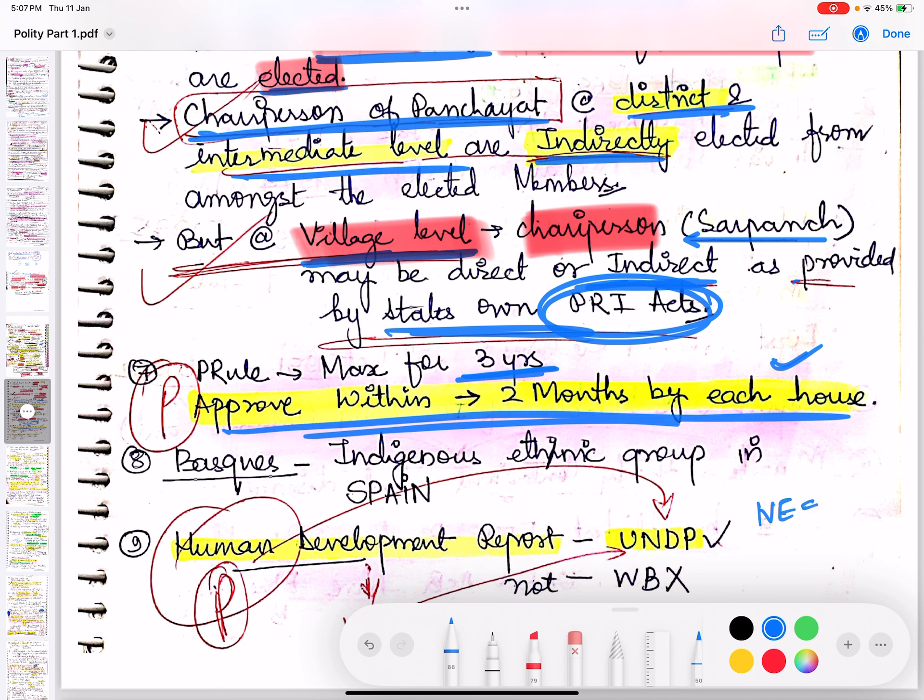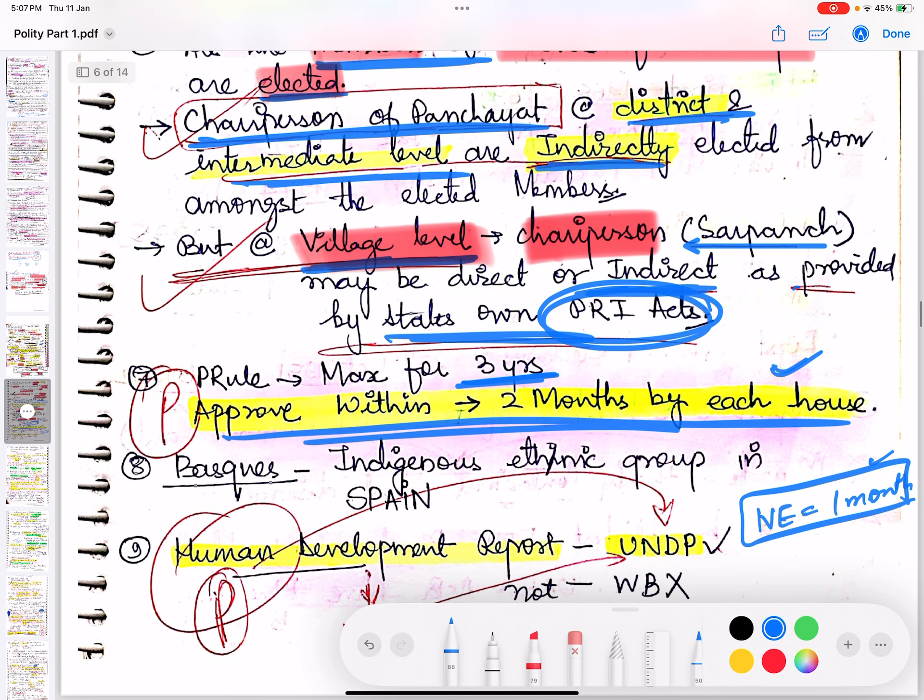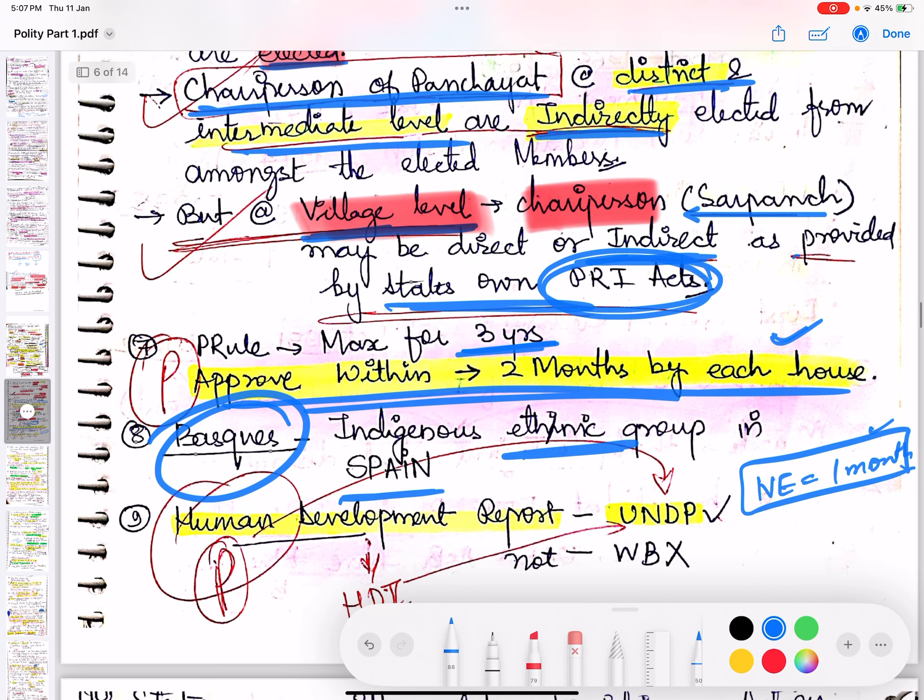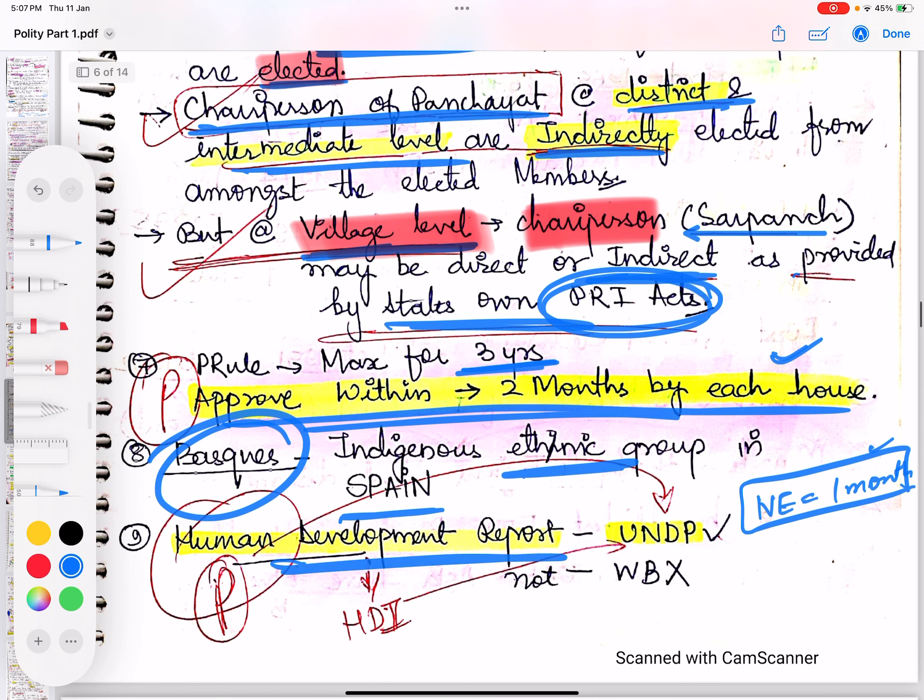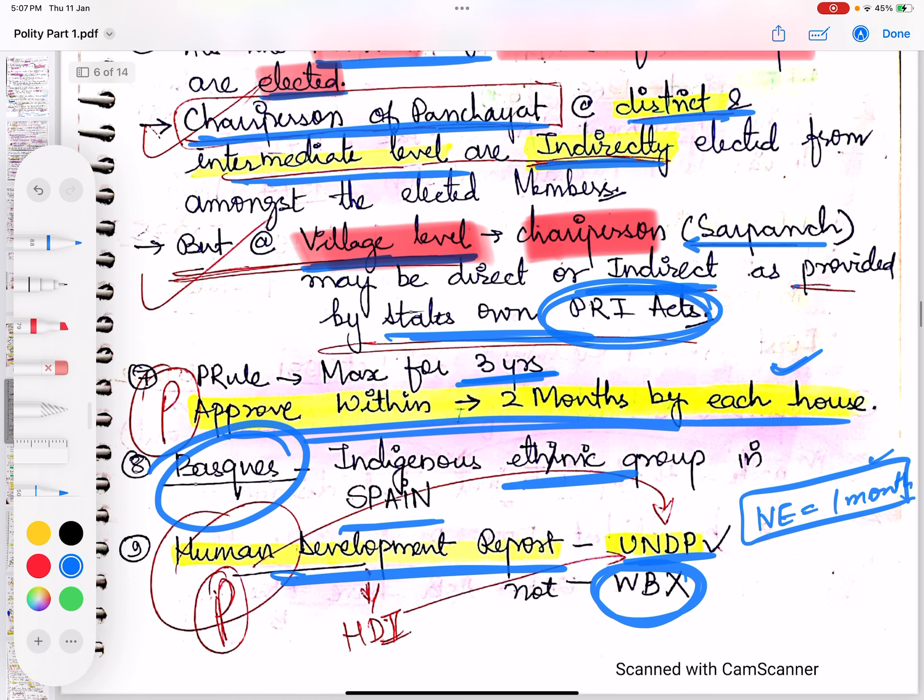Basque people - they are the indigenous ethnic groups of Spain. And last is about the Human Development Index. Human Development Report is released by UNDP, not World Bank. World Bank does not release it. So that was today's day 2 discussion. I hope you found it useful.